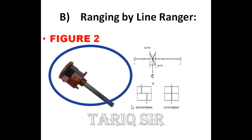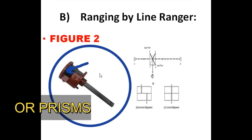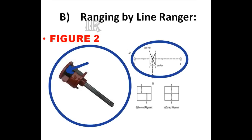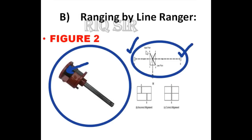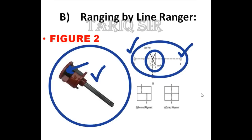Here in the figure you can see how a line ranger looks. This is the point where you look into it. Inside, there are two glasses which reflect the images of the ranging rods, and here is the image being formed. This is point A where the first ranging rod is, and point B where the second ranging rod is. Right in the center you have the line ranger — the apparatus through which you look at the lines that have to be in a straight line.